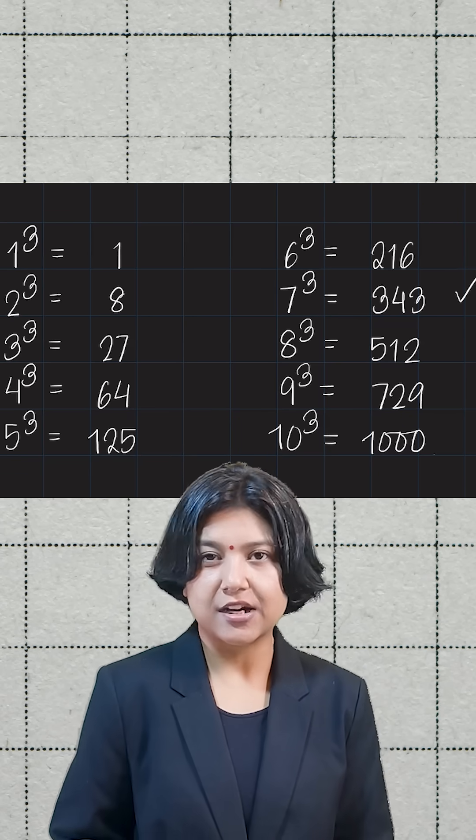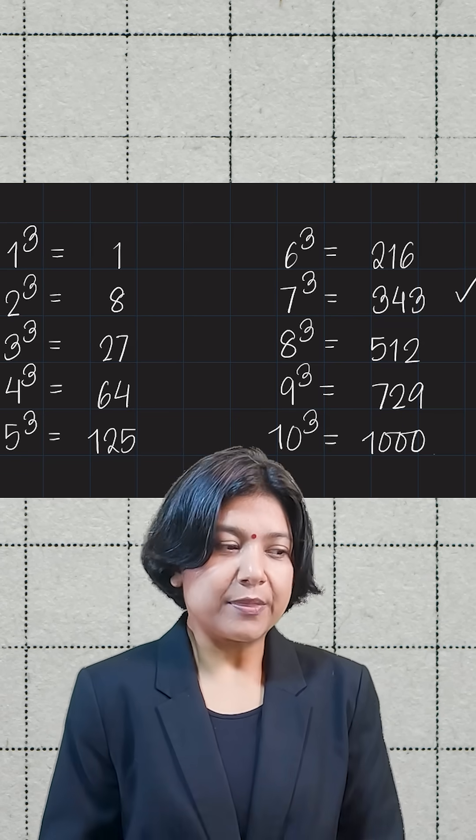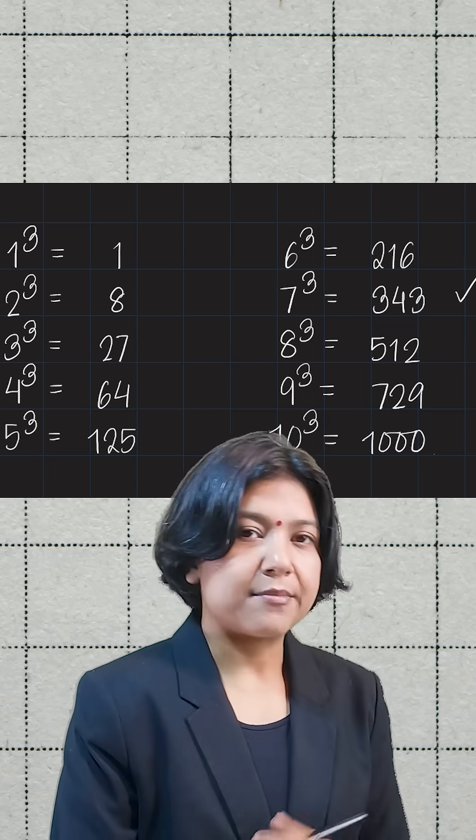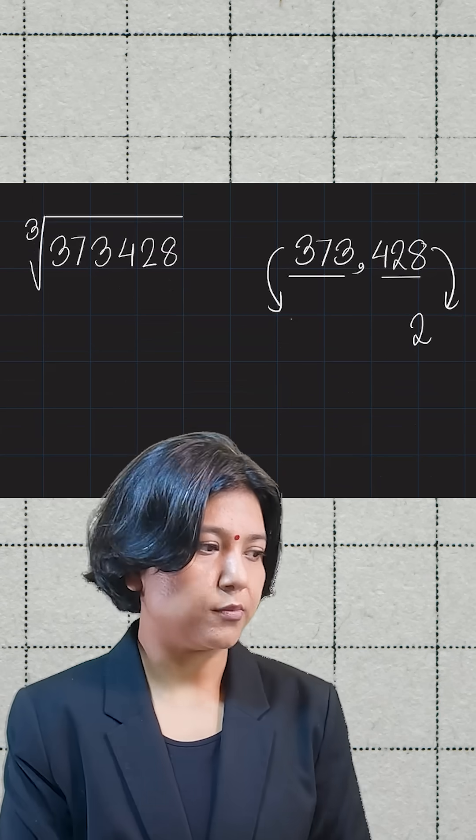So don't go ahead and write down 8 there. Because the given number is very close to the cube of 7, greater than 7 definitely, I'm still bounded to choose that 7.